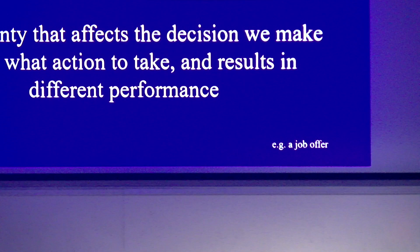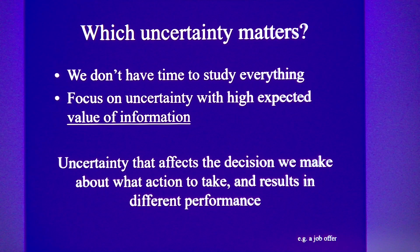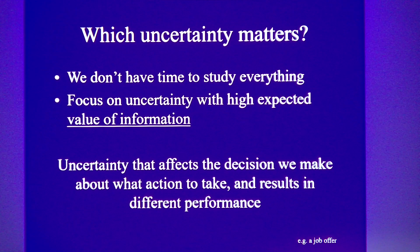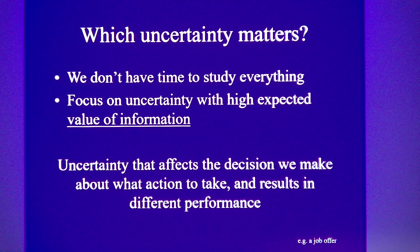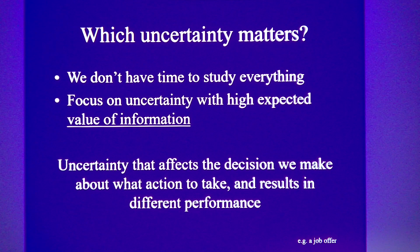This brings us to the really important question: which uncertainty matters? We don't have time when a new outbreak is happening to study everything. We want to use our models and theory to work smarter, not harder — we could do an awful lot of work finding out things that turn out don't make any difference to what we do or understand. We want to focus on uncertainty that actually changes our decision about how we manage Ebola or another disease.